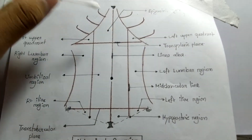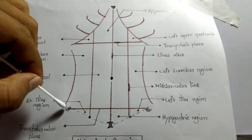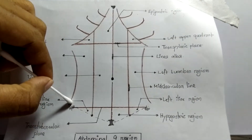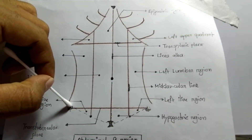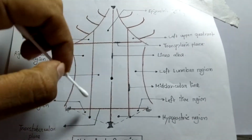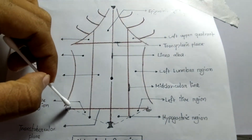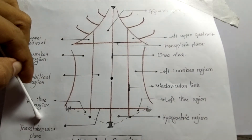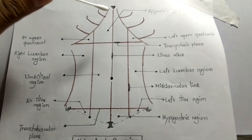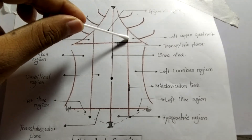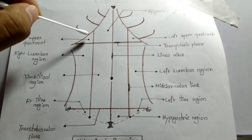This horizontal plane is called the transpyloric plane. Here you can see two tubercles — this is the anterior superior iliac spine. This is the right anterior superior iliac spine, this is the left anterior superior iliac spine. These two spines are connected with each other to make a transverse plane, which is called the trans-tubercular plane.